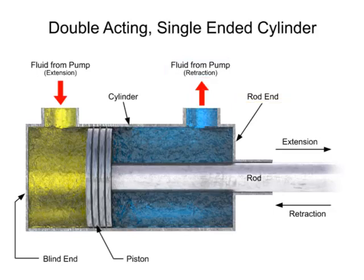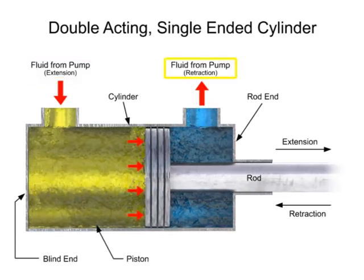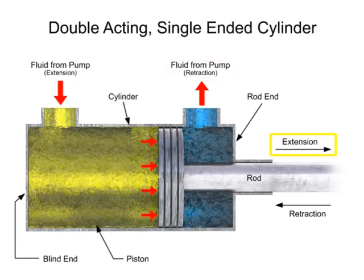A directional control valve sends fluid through the blind end port, while venting fluid out the rod end port back to the tank. Pressure builds up and generates a force on the piston, causing the extension stroke.